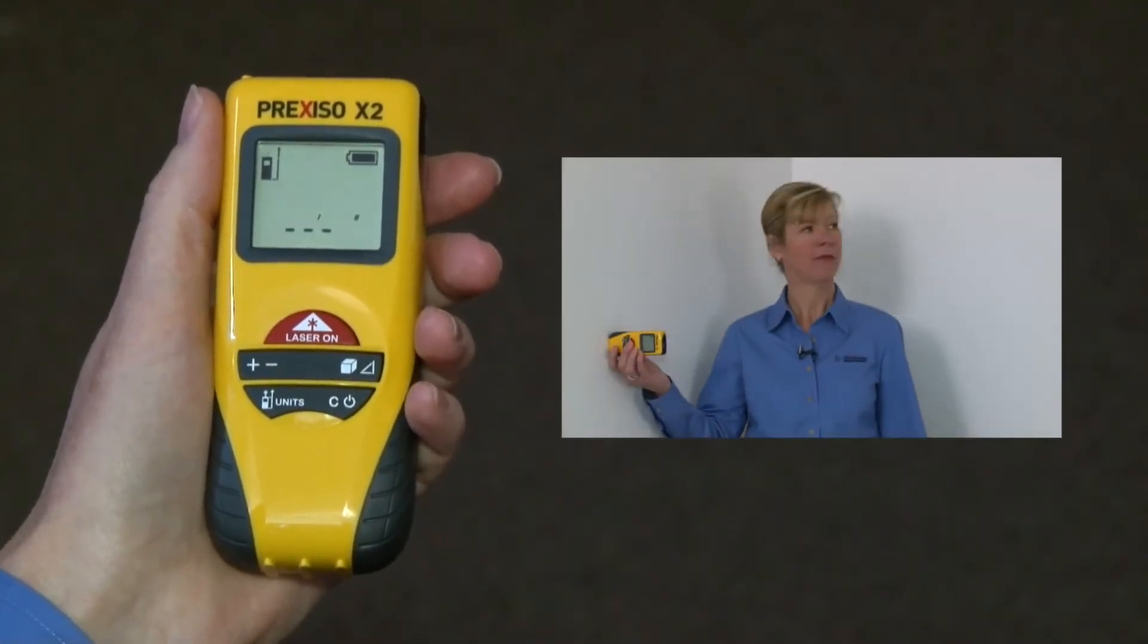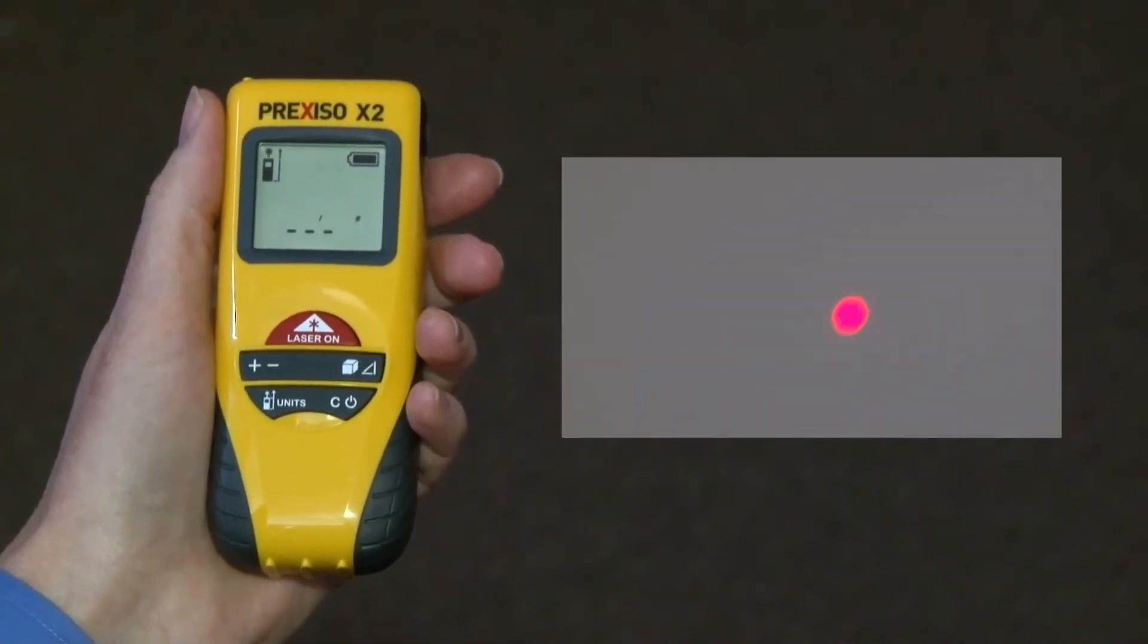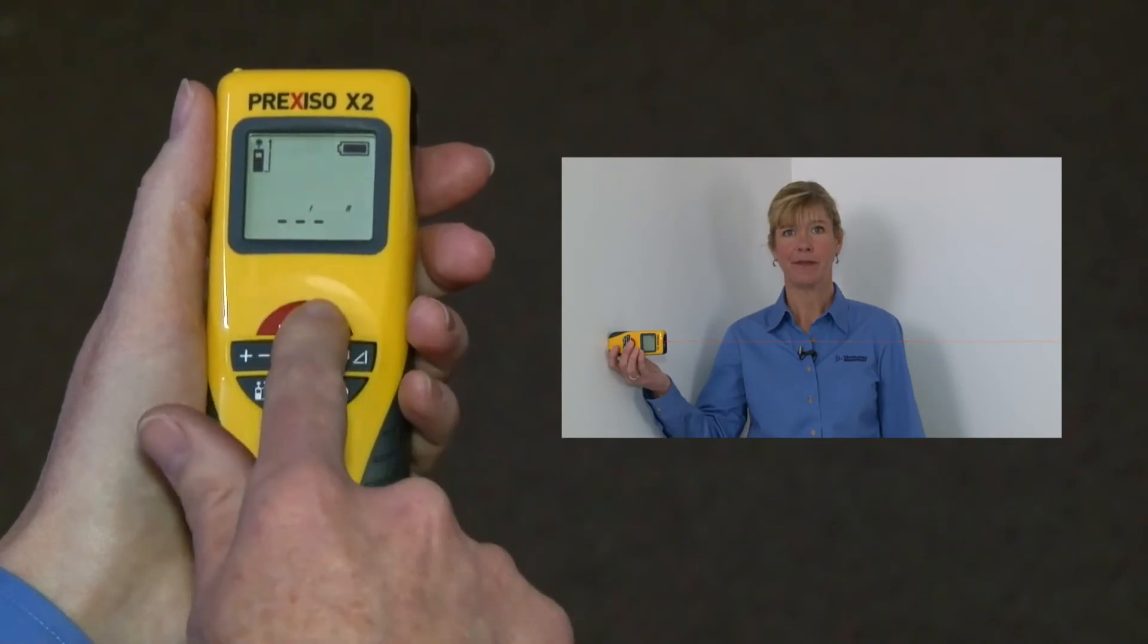I place the unit against the back of the wall and see that my laser is registering on the opposite wall and press and release the red button one time.